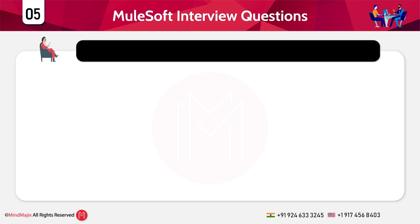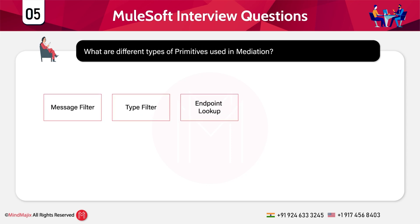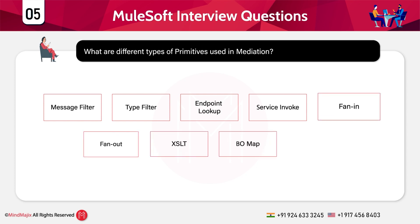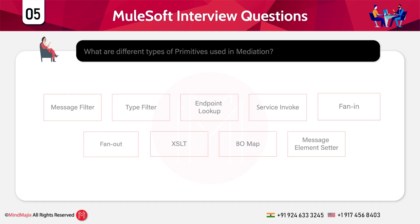What are the different types of primitives used in mediation? The various types of primitives used in mediation include: message filter, type filter, endpoint lookup, service invoke, fan-in, fan-out, XSLT, biomap, message element setter, data handler, custom mediation, header setters, message logger, event emitter, stop, fail, sub-flow, and others.